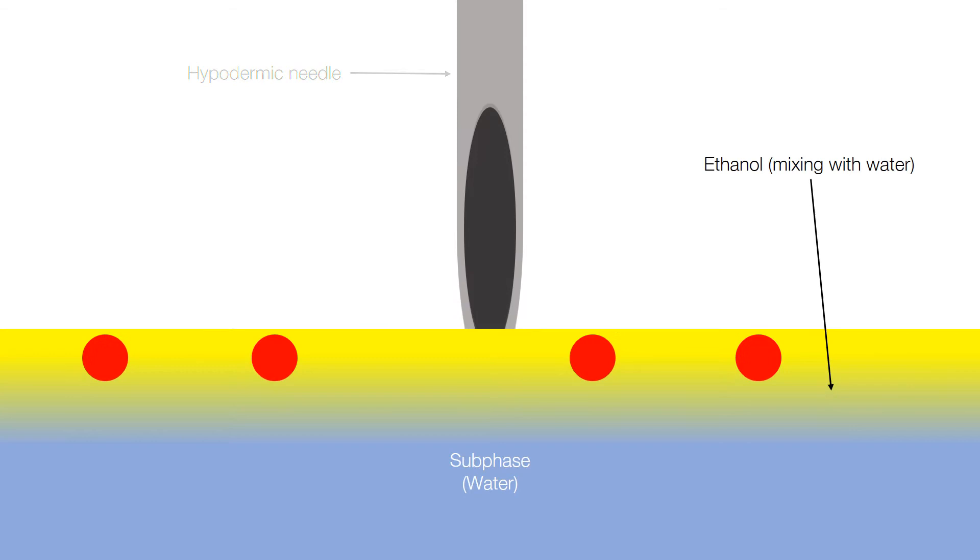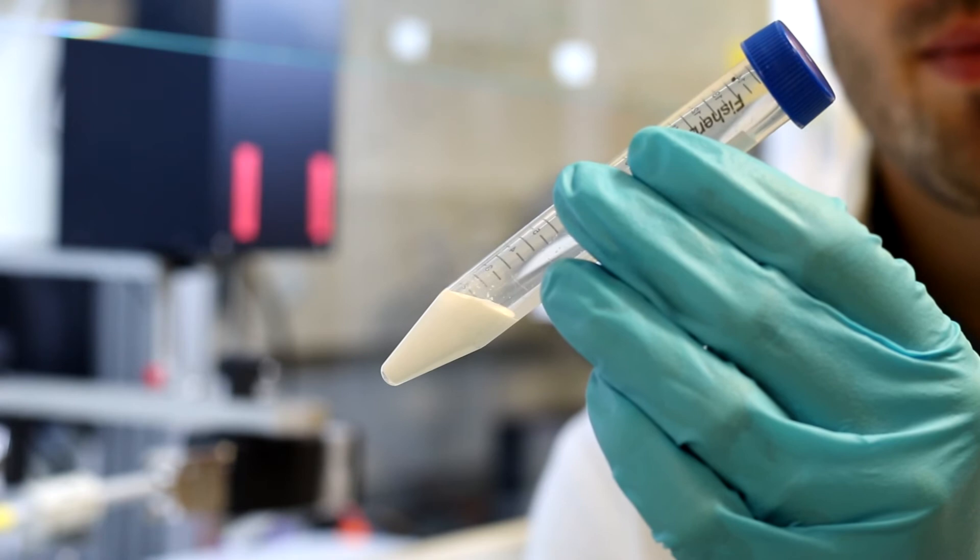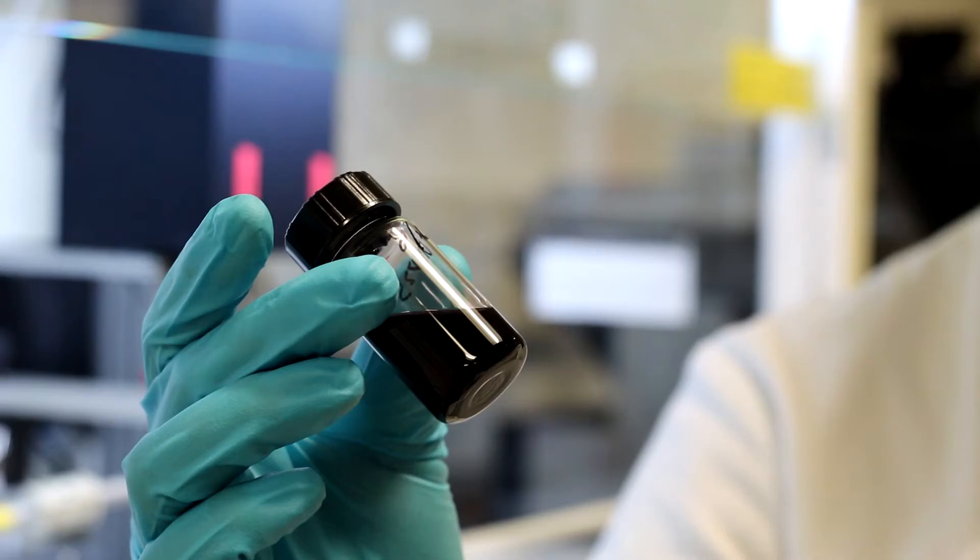In these situations, the alcohols in our spreading solvents will diffuse into the subphase bulk marginally affecting the surface tension of the water. Today, I'll be using an aqueous suspension of polystyrene nanospheres mixed with three times the volume of pure ethanol and these gold nanoparticles suspended in chloroform.